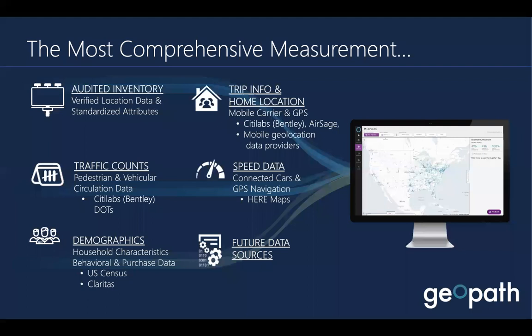We overlay data sources to get to the different metrics — understanding traffic counts leveraging DOT but also overlaying our CityLabs data, now owned by Bentley. We use Claritas for demographics, mobile geolocation data, and other sources to understand people's movement, trip info, and home locations. It's always important to note we're not looking at any personally identifiable information — it's always aggregated, anonymized data, laddered up to the census block group level.